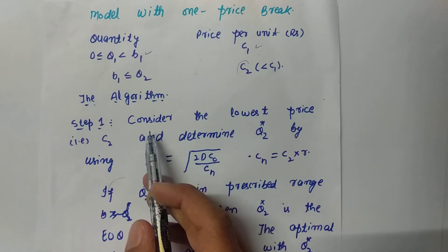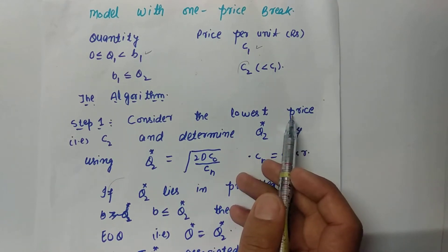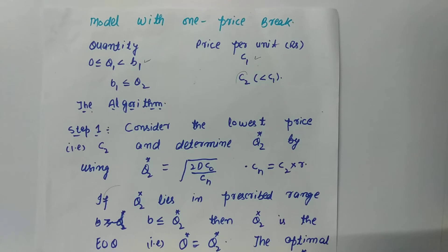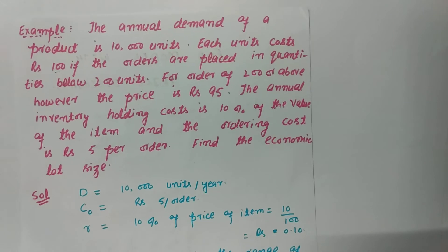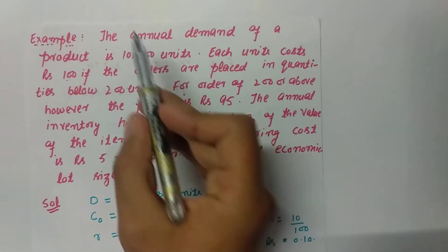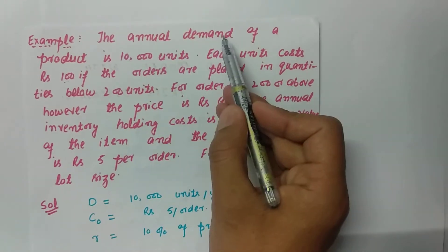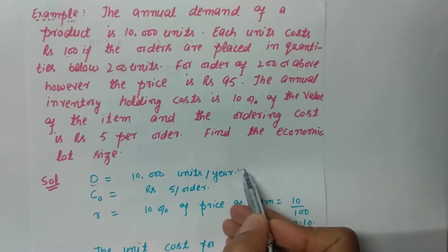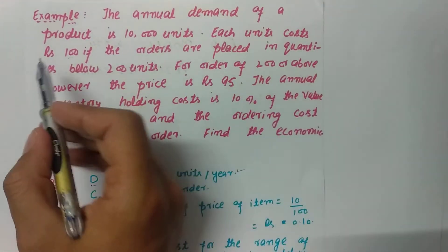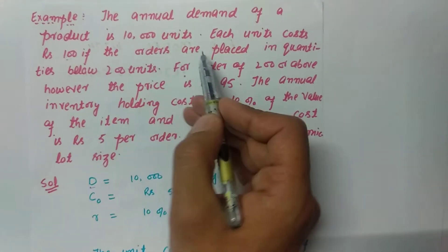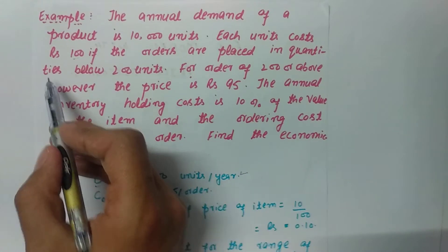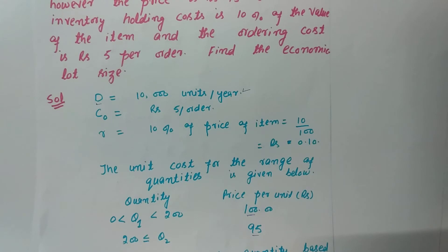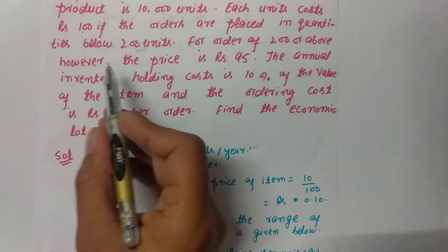The algorithm for solving this model first requires us to consider the lowest price, which is C2. Now let us discuss an example. The annual demand for a product is 10,000 units per year. Each unit costs 100 rupees if orders are placed in quantities below 200 units.